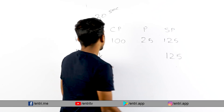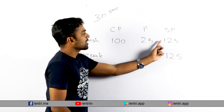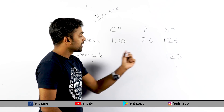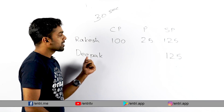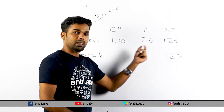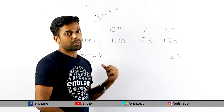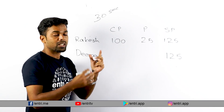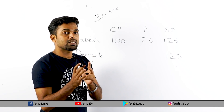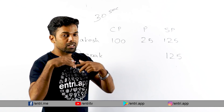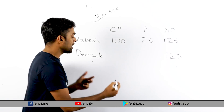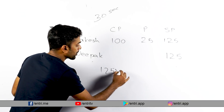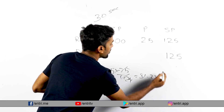What is the selling price of Rakesh? It is 125. Now for Deebak — the selling price is also 125. Deebak's profit percentage is 25% on the selling price, so profit = 25% of 125 = 31.25.